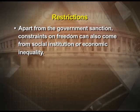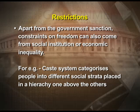Apart from government-sanctioned constraints, freedom can also be curtailed by social institutions or prevailing economic inequality in society. For example, the caste system categorizes people into different social strata placed in a hierarchy. Upper caste groups place restrictions over individuals in lower caste groups — stopping them from visiting temples, curtailing their freedom of movement, access to drinking water from the village well, or taking up certain professions.